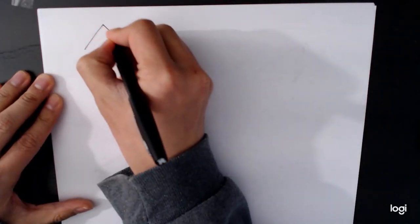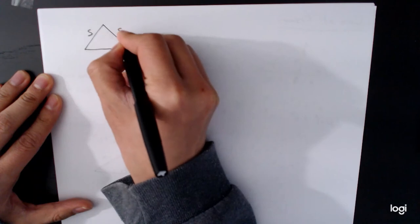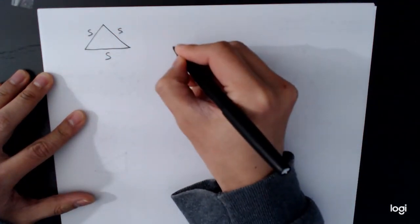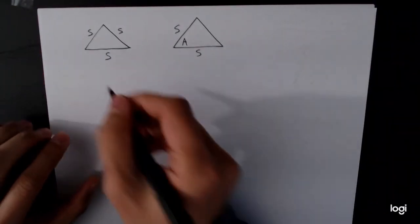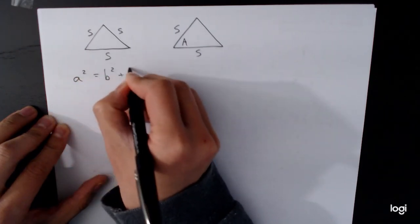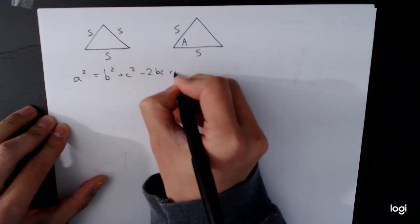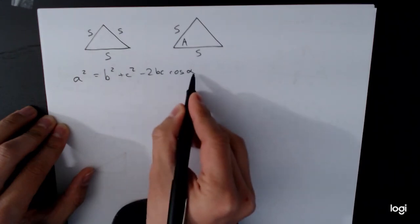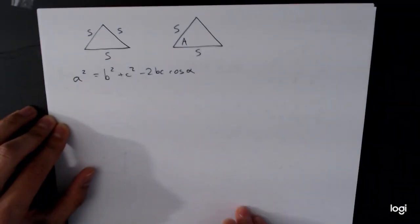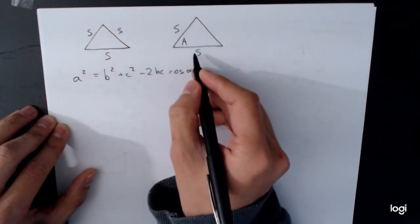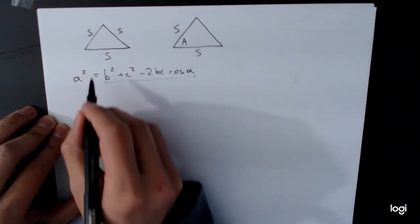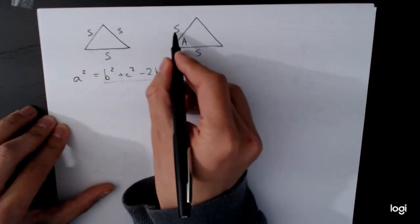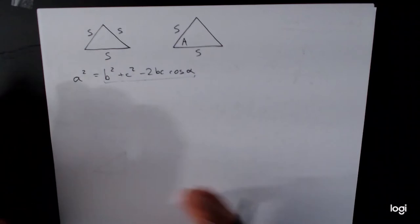Before looking at an example, let's consider when the law of cosines is best applied. There are two specific cases: side-side-side, and side-angle-side. In the SSS case, all three sides are known and the only unknowns are angles. In the SAS case, we need the angle to be between the two known sides, since alpha and a are opposite each other — b and c are adjacent to alpha — so everything on the right side of the equation is known.